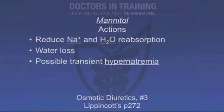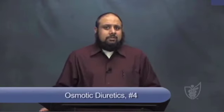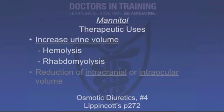The major effect of mannitol happens in the proximal convoluted tubule, reducing sodium and water reabsorption, leading to water loss and a transient hypernatremia. Mannitol has interesting clinical uses. It can increase urine volume — specifically important in hemolysis or rhabdomyolysis, which can produce nephrotoxic pigments causing anuria. We use mannitol to flush out the kidneys, maintain urine volume, and keep anuria from developing.